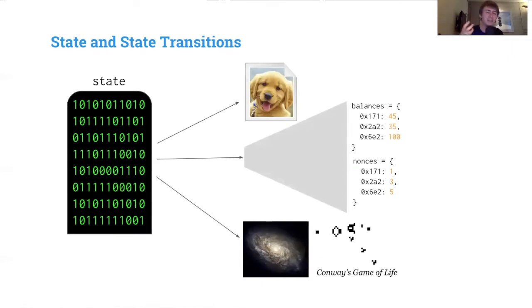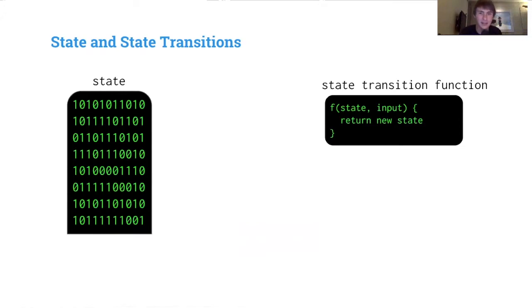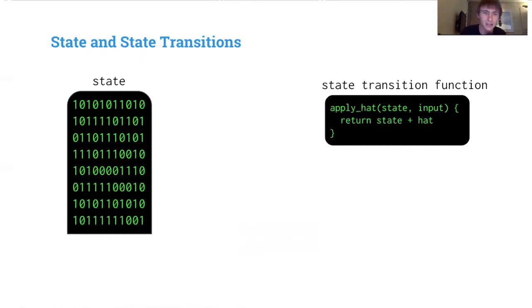They can also represent our application state — the balances and nonces of our super duper cool central payment processor. The state is a snapshot, and the state transition function is how we move from one moment to the next. It takes in a state and an input and returns a new state — the next state.